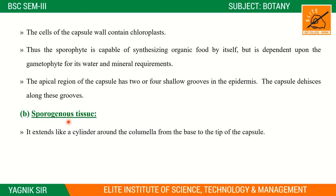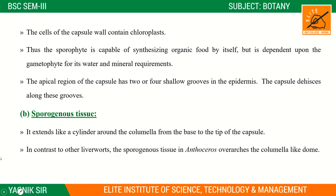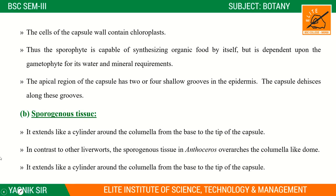Another region is the sporoginous tissue. It extends like a cylinder around the columella from the base to the tip of the capsule. It is a column-like structure surrounding the columella.